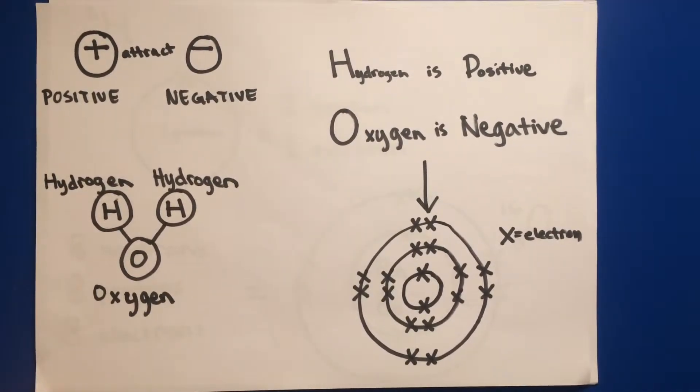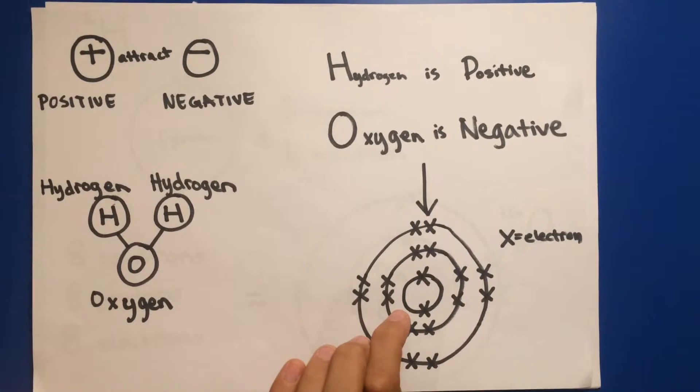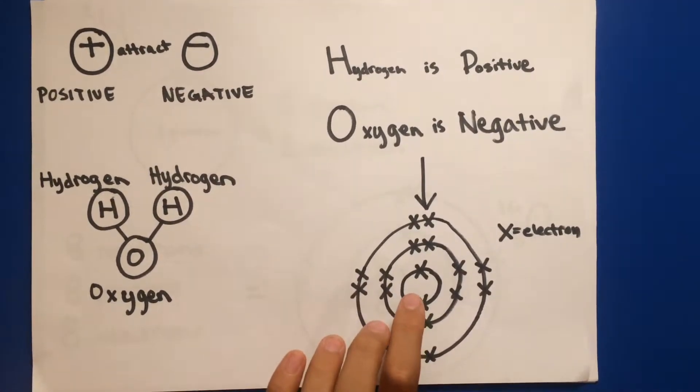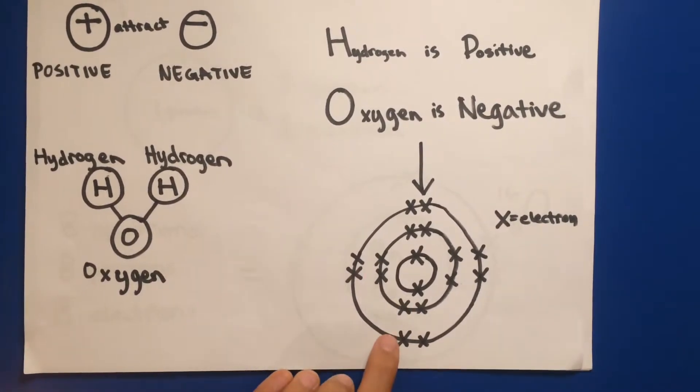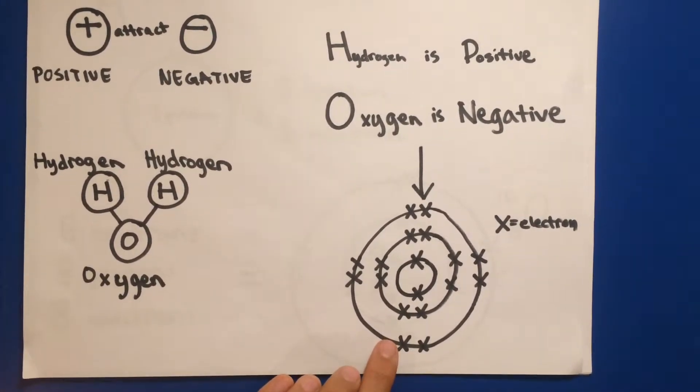You see, in an atom there is something called electron rings. They contain electrons. The first ring contains two, the second ring contains eight, and the third ring can also contain eight.